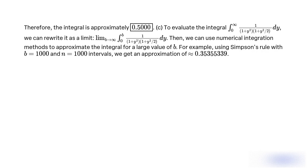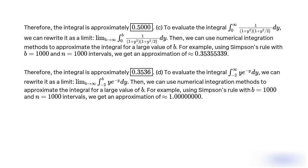For example, using Simpson's rule with b = 1,000 and n = 1,000 intervals, we get an approximation of 0.35355339. Therefore, the integral is approximately 0.3536.